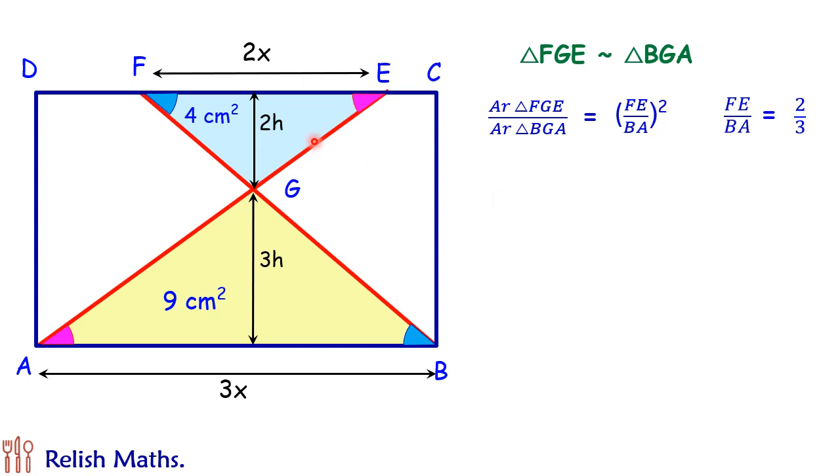Now if we will take the area of blue triangle, that's triangle FGE, area is half of base into height. Base is 2X and height is 2H. Now this area FGE is given as 4. Solving it further we will get X into H is 2. Now this observation we will use it later on.